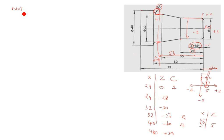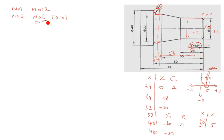The program starts with N01, as we saw in the last class. M01 is for clamping the tool, so we write M01 2. After that N02 with M06 T0101. M06 is tool change, and T0101 is the tool number. Tool numbers can be T0101, T0102, T0106, and so on. We will use T0101 in this case.